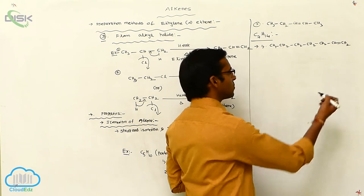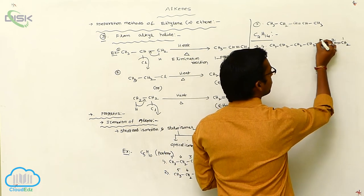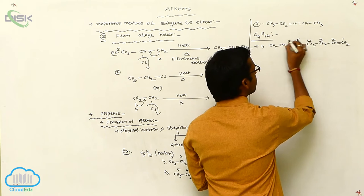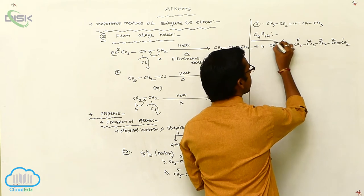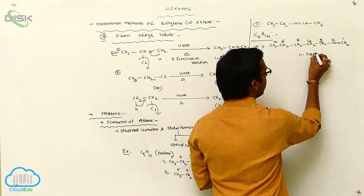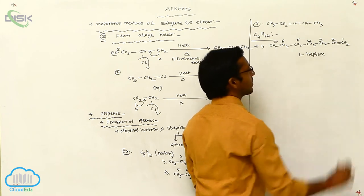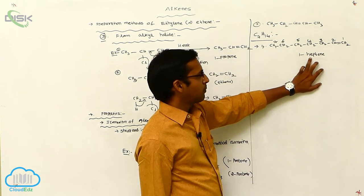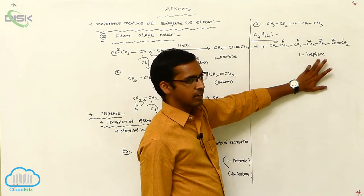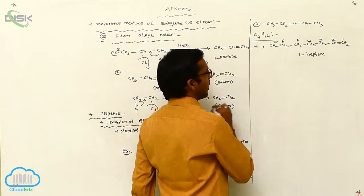Give the numbering for the least number for the double bond: 1, 2, 3, 4, 5, 6, 7. The number of this one is 1-heptene. Because 7 carbons are present, the root word is 'hept'. The unsaturation means heptene. This is one isomer.